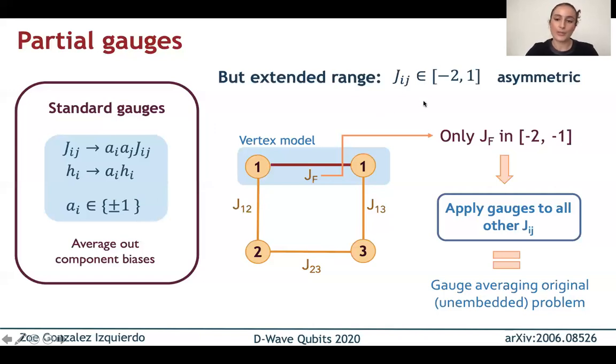And so what we did was use a different version of this method, which we call partial gauges. And since our jf is the only one that's in the asymmetric range, and all the other couplings outside of vertex models are not in the asymmetric range, we just apply regular gauges to all the other couplings. And this is equivalent to doing regular gauge averaging on the original unembedded problem. And it actually worked pretty well, as we will see in the next few slides.